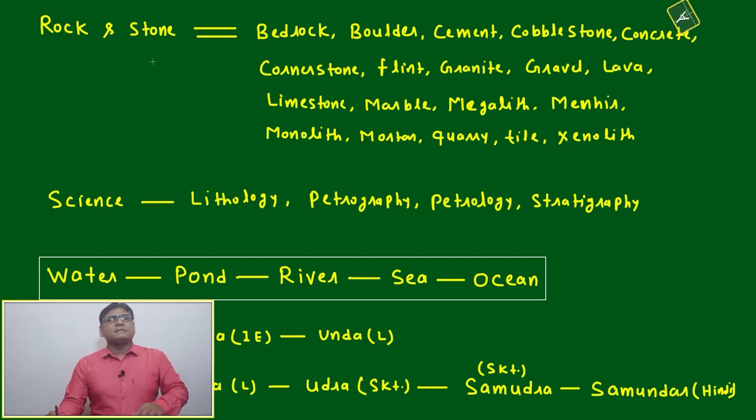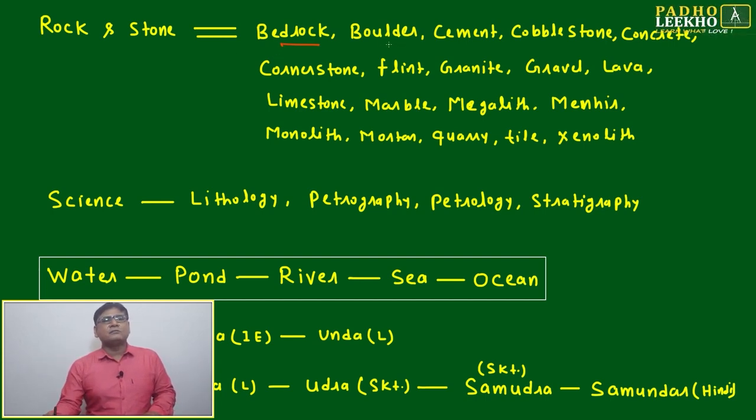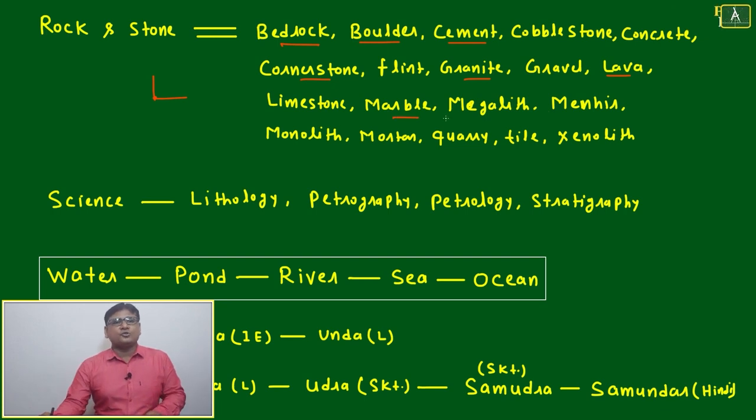Now we'll come to similar words or parallel words related to rock and stone. Bedrock, the lower portion of your Earth surface. Boulder, that many times will be used in construction. Cement, cobblestone, concrete, cornerstone - cornerstone is the joining between two sides of any construction. Then flint, granite, gravel, lava - molten stone, limestone, marble, megalith.